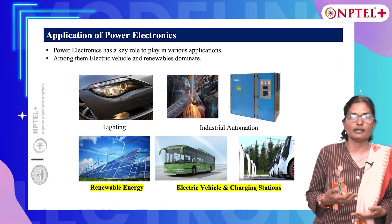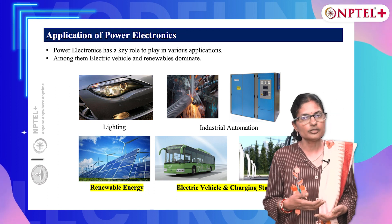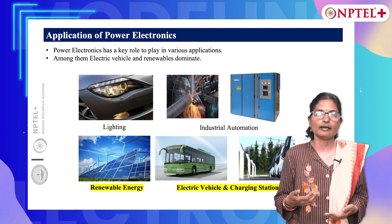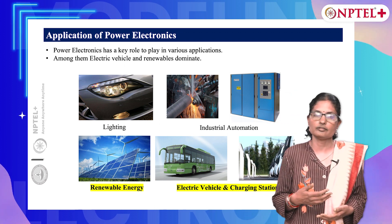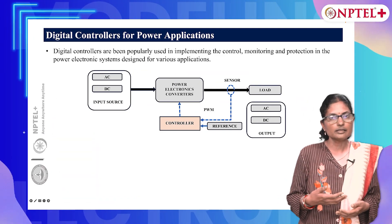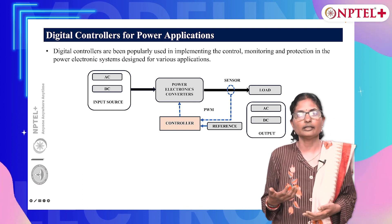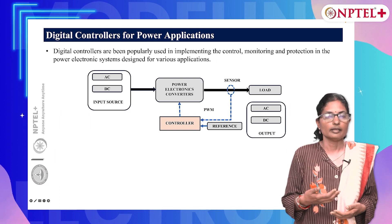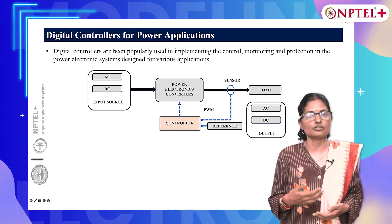Power electronics has a key role to play in various applications like lighting, welding, industrial automation, renewables and electric vehicles. Among them, the renewable energy applications and electric vehicles dominate. Digital controllers have been popularly used in implementing the control, monitoring and the protection in the power electronic systems designed for these various applications.